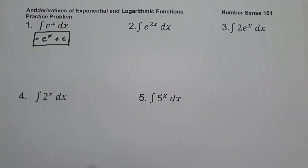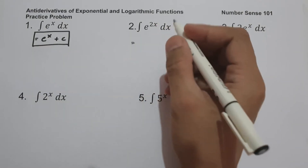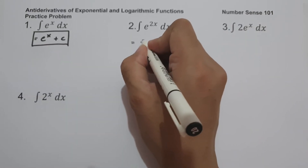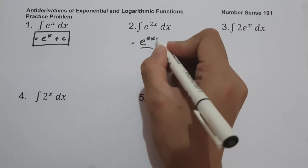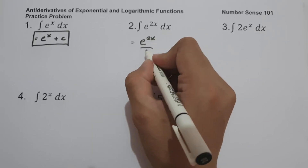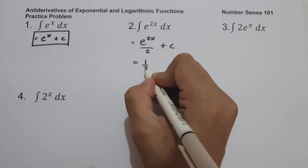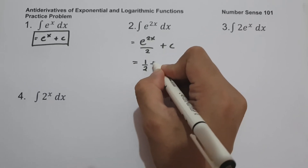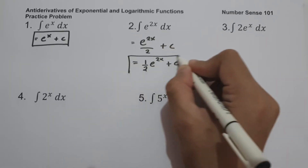On number two, what is the antiderivative of e^(2x) dx? The exponent of e is 2x, so we get e^(2x) over the derivative of 2x, which is 2, plus c. This can also be written as (1/2)e^(2x) + c, and that is our answer.